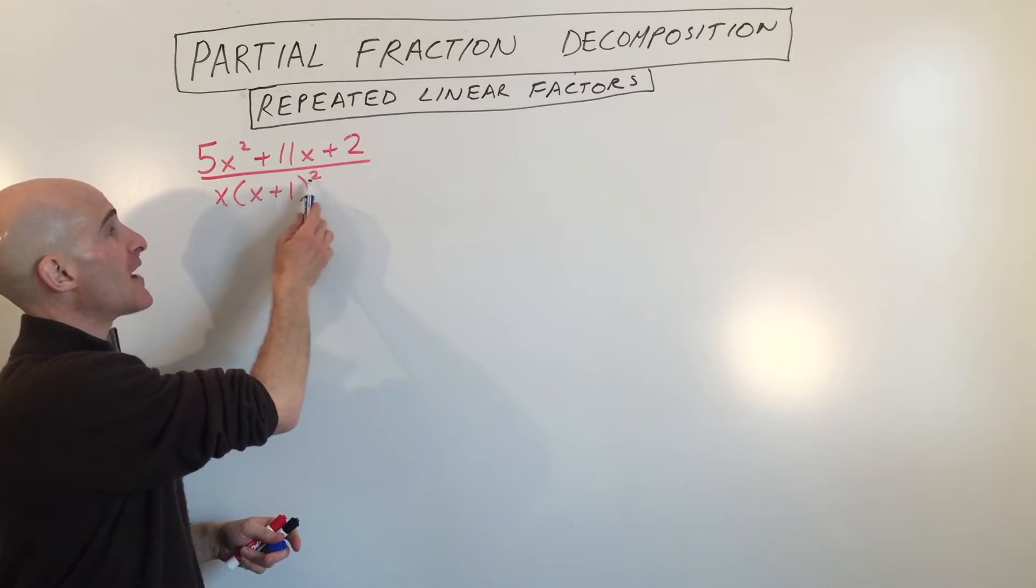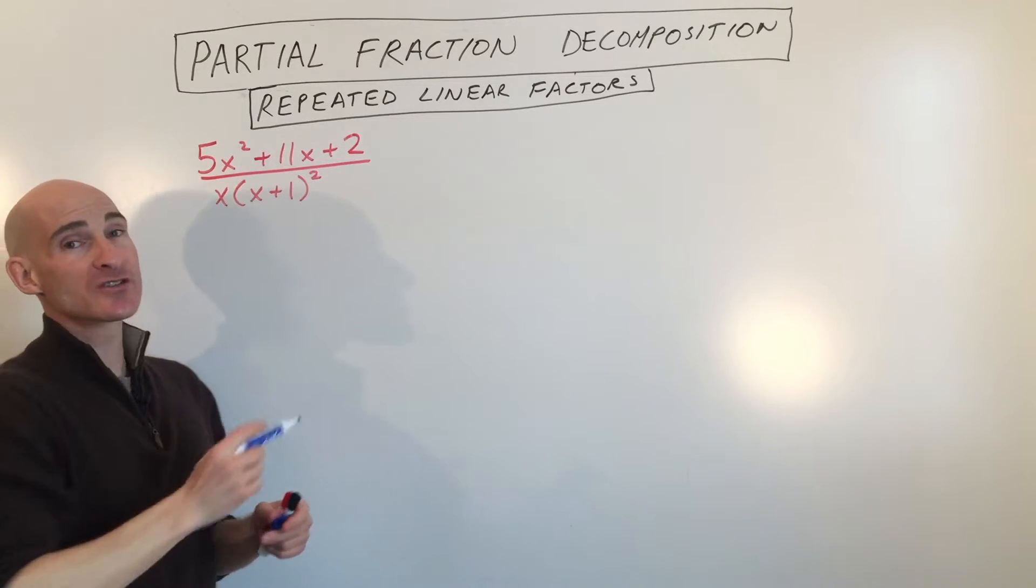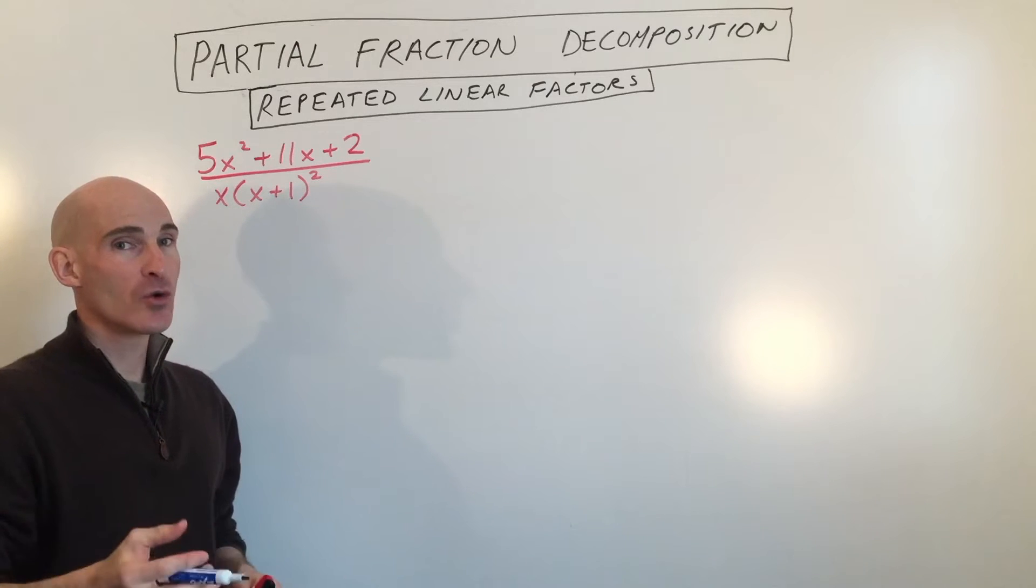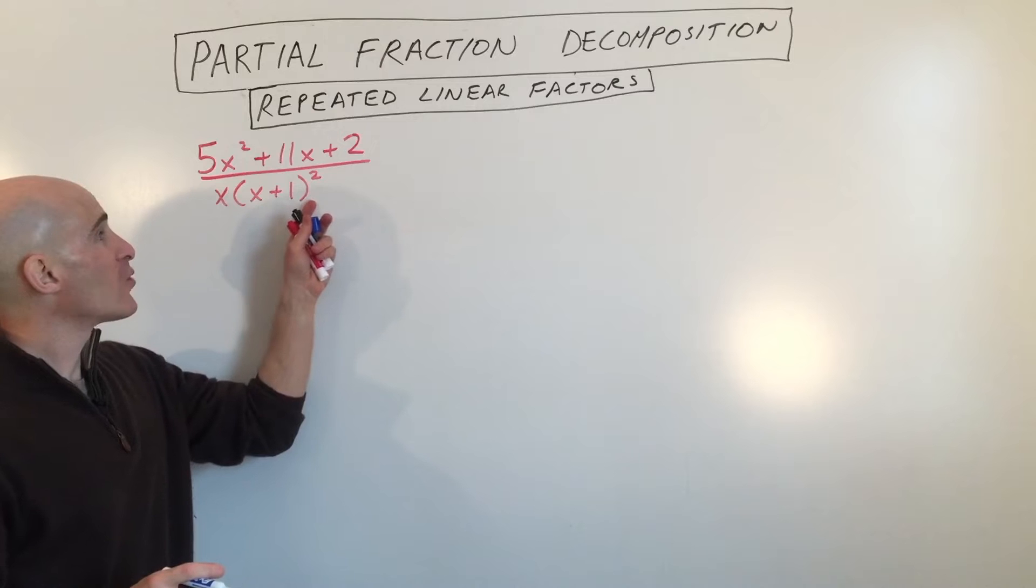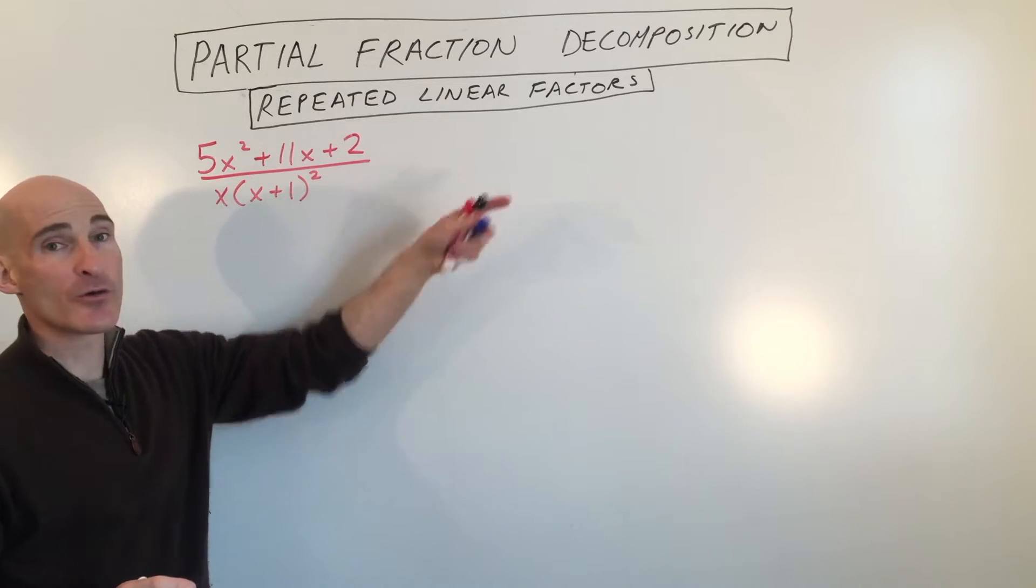If we were to foil this out, this would be x cubed. The degree in the numerator is lower than the degree in the denominator, so we don't have to do long division and convert it. So the first thing we want to do is we want to see how we're going to break this down.